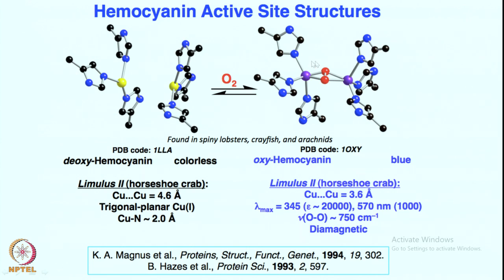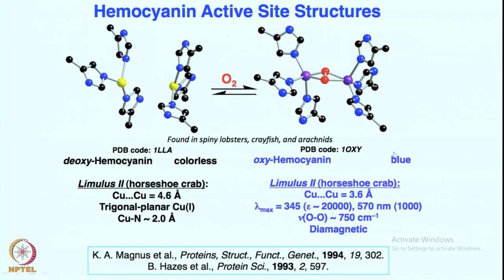This dicopper peroxo species has a copper-copper distance of 3.6 angstroms — shortened from 4.6 angstroms. It was far apart, and oxygen brings them closer to each other. This oxyhemocyanin giving blue color is very characteristic of this sort of species. Both the UV-visible spectra, resonance Raman spectra, and EPR spectra show the diamagnetic structure, and the crystal structure clearly shows it is a side-on bound peroxo species, where both copper centers are binding with both oxygen atoms equivalently.